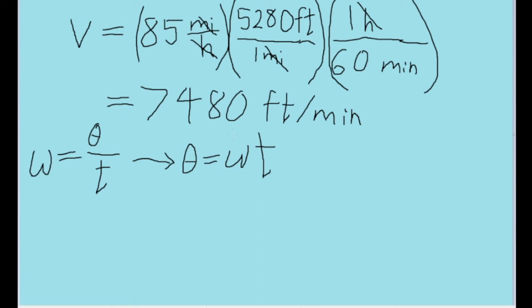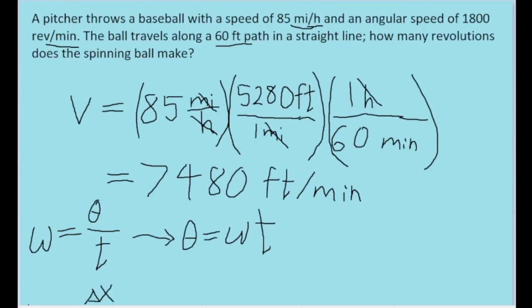And we can do that using the speed formula. Kind of similarly to angular speed, the formula for standard linear speed, or v, is equal to the displacement, or the distance that something travels, or delta x, divided by, again, the amount of time, or t. Now the problem does tell us the ball's linear speed, 85 miles per hour. And the problem also tells us the distance that it travels, the delta x, the 60-foot flight path.